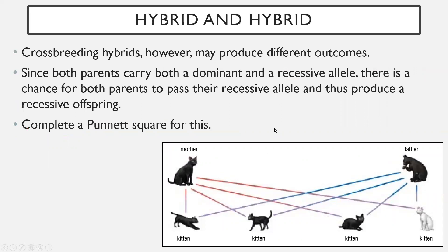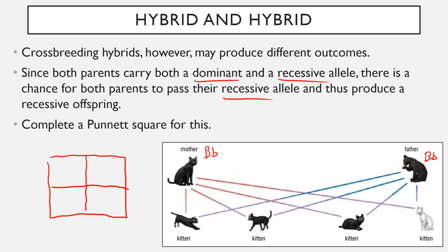Now if we look at crossbreeding two hybrid cats — both capital B, lowercase b — we're going to produce some different outcomes. Since both parents carry both a dominant and a recessive allele, there is a chance for both to pass their recessive allele and produce a recessive offspring. Completing a Punnett square illustrates this. We put the mother on top — capital B, lowercase b — and the father on the side — capital B, lowercase b. The four boxes give us: capital B capital B, capital B lowercase b, capital B lowercase b, and lowercase b lowercase b.